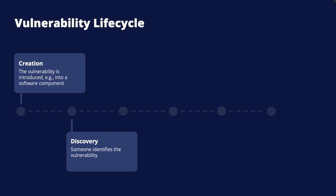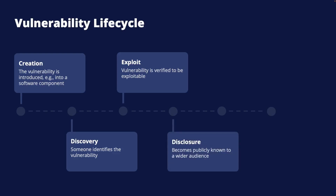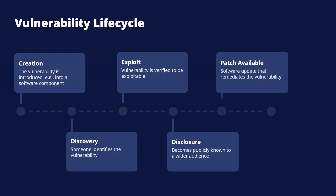The next stage is discovery — this is when someone identifies the vulnerability, perhaps by chance or through methodological software testing. If the vulnerability is intentionally inserted, the creation and discovery times will coincide. Then we have the exploit phase, where the discovered vulnerability is verified to be exploitable using certain requests, communication patterns, or a sequence of commands. Next is the disclosure phase, when the vulnerability becomes publicly known to a wider audience.